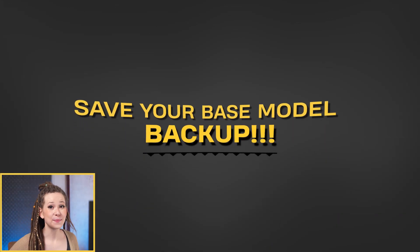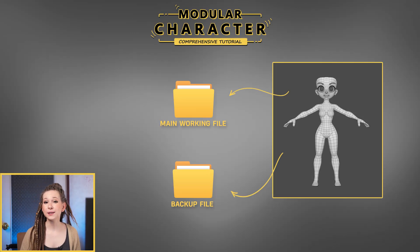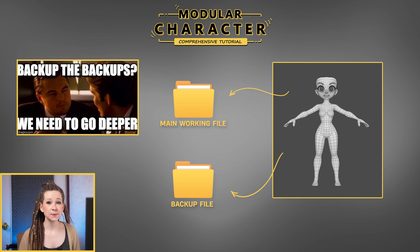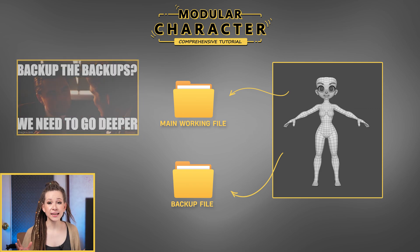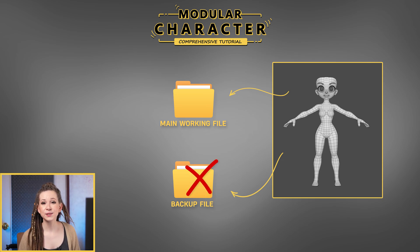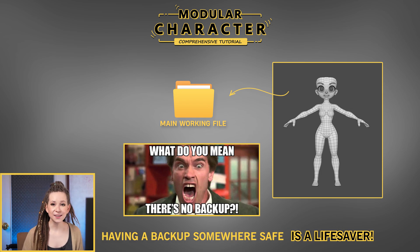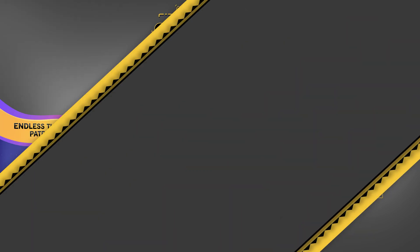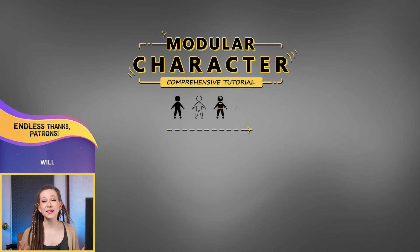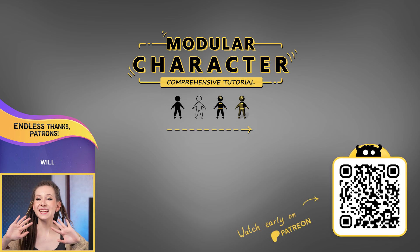Save your base model as a backup. Remember to save all your hard work in a separate file. You wouldn't want to discover in the middle of creating a new set of clothes that you accidentally used the original low-poly body — and now it's gone! Having a backup copy stored somewhere safe is a lifesaver. It's been a pleasure sharing this with you. Next time we'll dive into sculpting. Stay awesome!